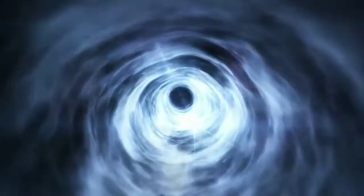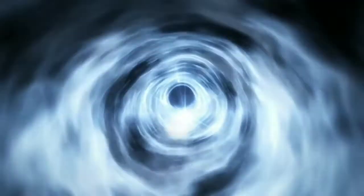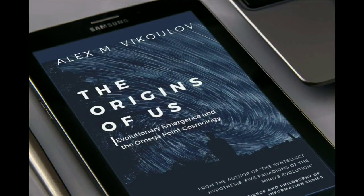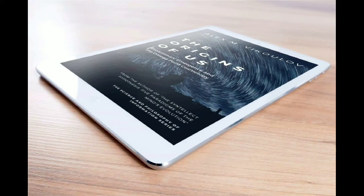One may see significant overlapping ideas between the transhumanist technological singularity and the Teilhardian Omega Point. Excerpt from The Origins of Us: Evolutionary Emergence and the Omega Point Cosmology by Alex Vikoulov, available now as e-book on Amazon.